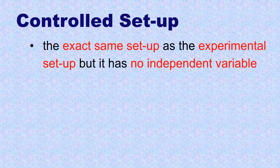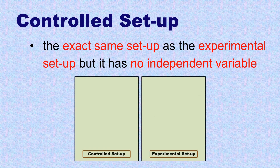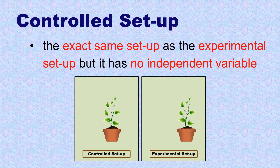The controlled setup is the exact same setup as the experimental setup but it has no independent variable. For example, these two setups have the same species of plant with the same size, health, and age, the same type and amount of soil, the same pot, and the same amount of water at the same schedule of watering.